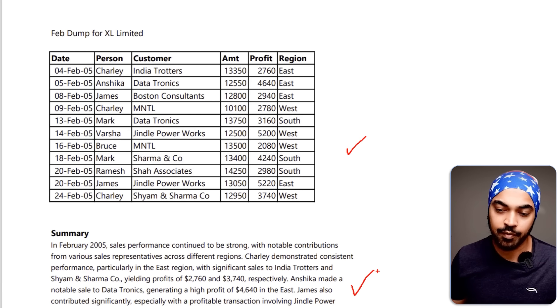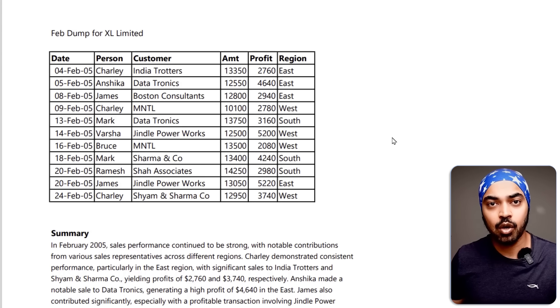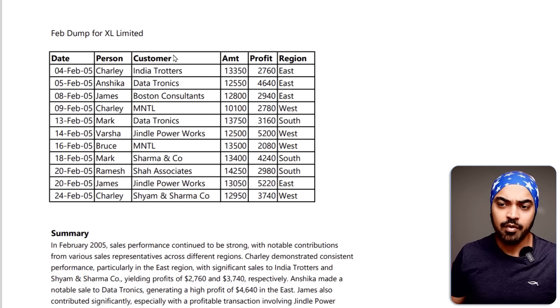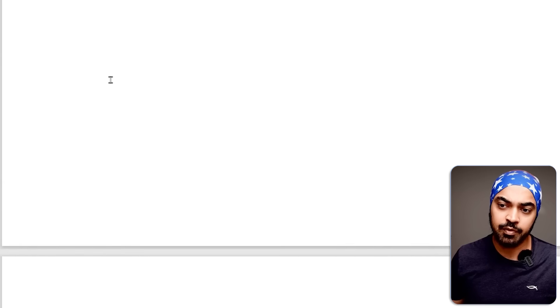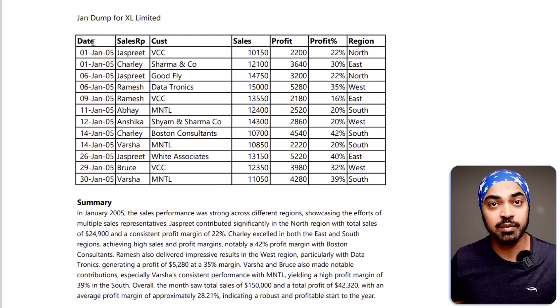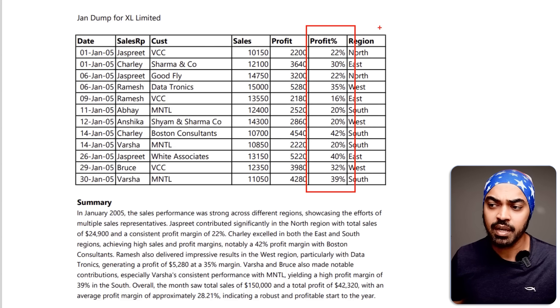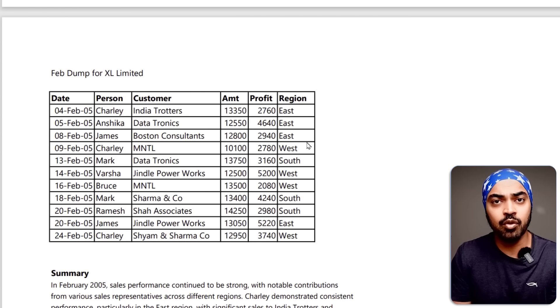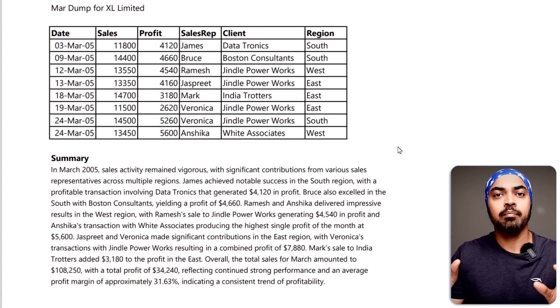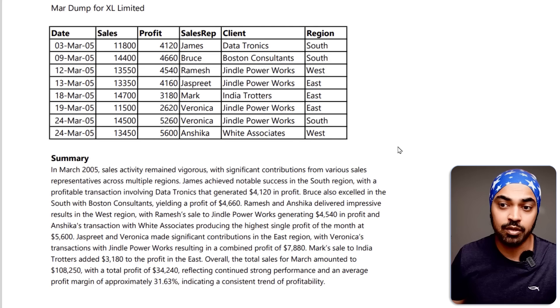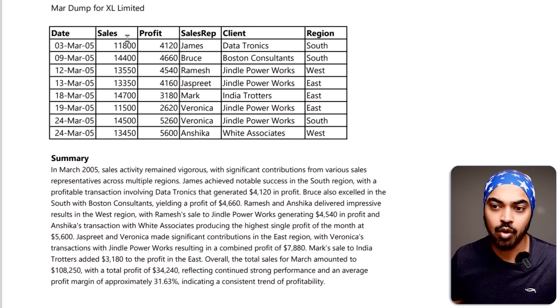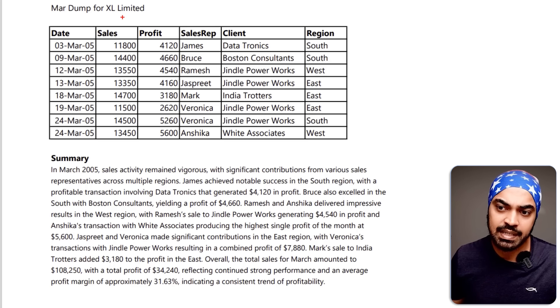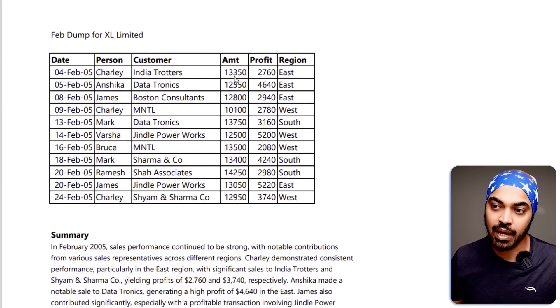If you closely look at the data, the columns are almost similar but not the same. For instance, the first table for January has a 'Date' and 'Sales Rep' column, while February has a 'Date' and 'Person' column. There's also an additional 'Profit Percentage' column that seems missing from the second table. As you scroll through multiple tables, the column names keep changing, and even the sequence of columns is inconsistent — 'Sales' appears as one column name but also as 'Amount' in another table.